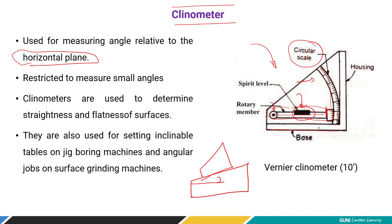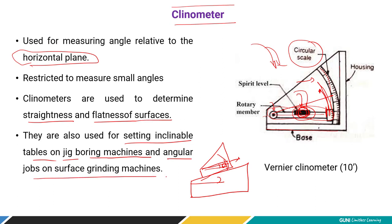You then try to restore the bubble to its center position by moving the end of the clinometer, and this gives you the reading. The movement from the initial center position to the restored position is your angular measurement. In industry, clinometers are used to measure the straightness and flatness of surfaces, for setting the inclined table on jig boring machines, and for angular jobs on surface grinding machines.